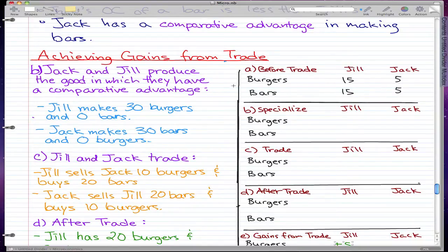Now that we have that out of the way, let's have Jack and Joe specialize in what they're good at. What I mean is, let's have them make what they have a comparative advantage in.